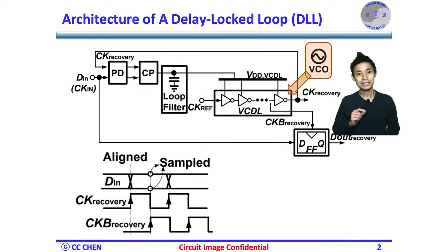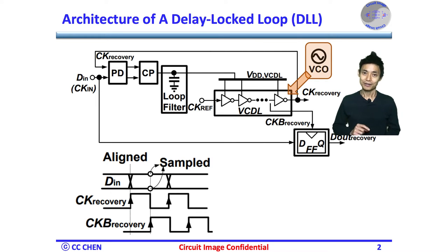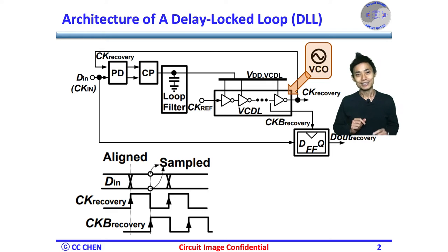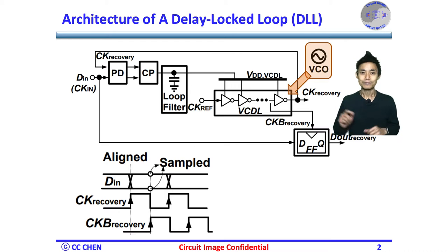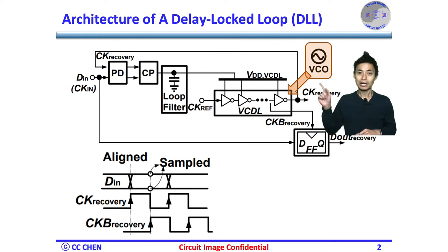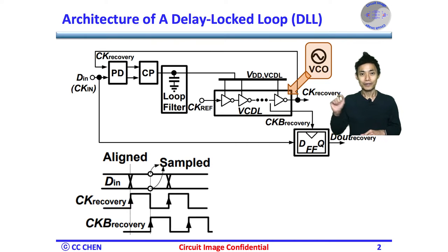Before talking about the DLL-based CDR, let's go through what the DLL is from the top. The DLL is a delay lock loop, which is like a phase lock loop, except the voltage-controlled oscillator is replaced by a voltage-controlled delay line (VCDL) for phase alignment or adjustment.